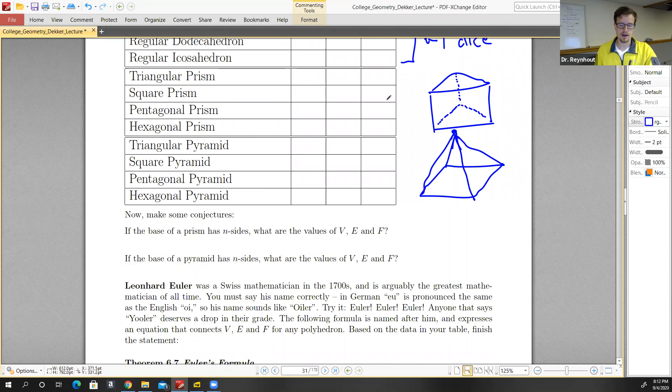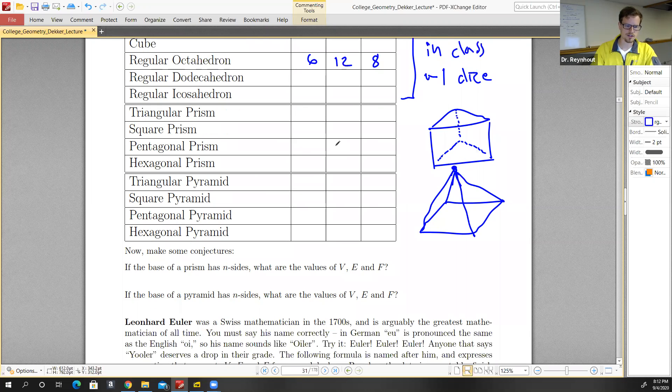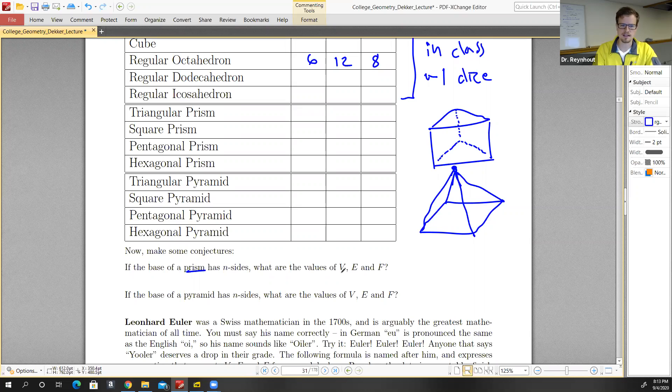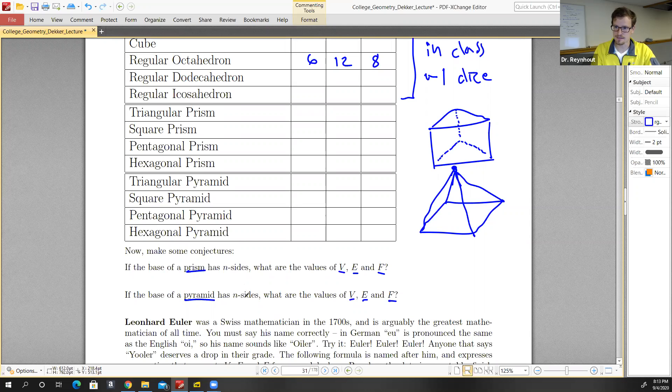But once you've done that, once you have drawn these and filled in this table, two questions to answer. For the prisms, a prism with N sides, we should be able to find a pattern that tells us when there are N sides, we can determine how many vertices, edges, and faces there are whenever the base has N sides. So we can write V in terms of N, E in terms of N, and F in terms of N. And then the same question can be asked when we have a pyramid. So if we have a pyramid, how many vertices, edges, and faces do we have when the base has N sides?